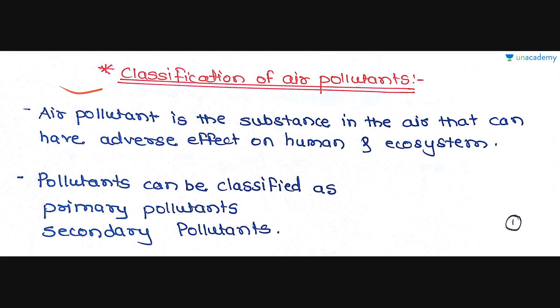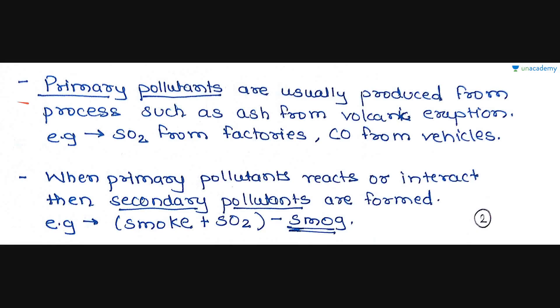Let's start with the classification of air pollutants. In my previous lesson we covered a detailed introduction to air pollution, its definition, and what an air pollutant is. An air pollutant is a substance in the air that can have an adverse effect on humans and the ecosystem. Pollutants can be classified as primary pollutants and secondary pollutants.